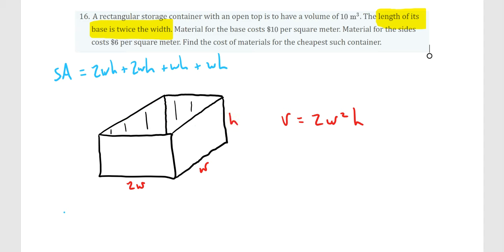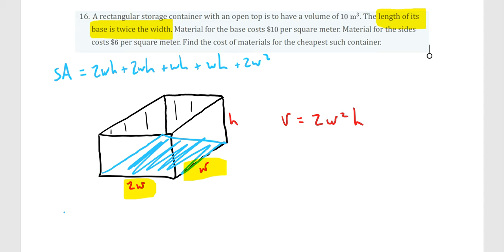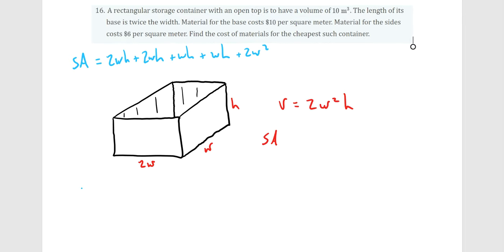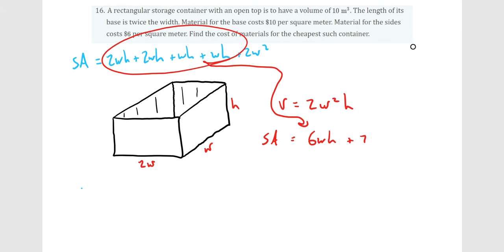There's one more side — the base — which is somewhat hidden. The base area is 2W squared. We don't have two of those because this is an open top, so there's no surface area on top. Combining like terms: the four side panels give 6WH, and adding the base gives SA = 6WH + 2W².